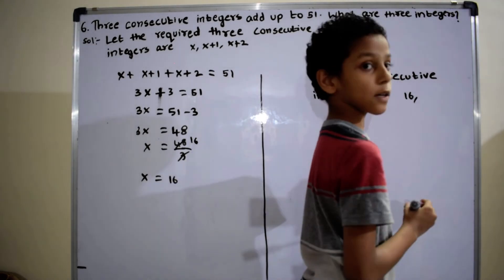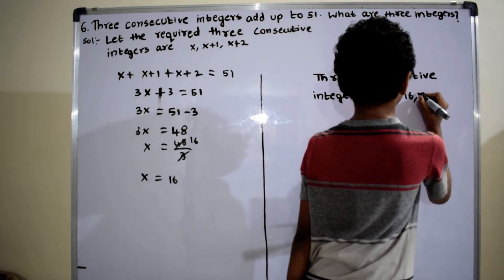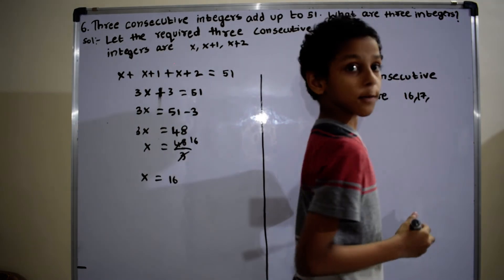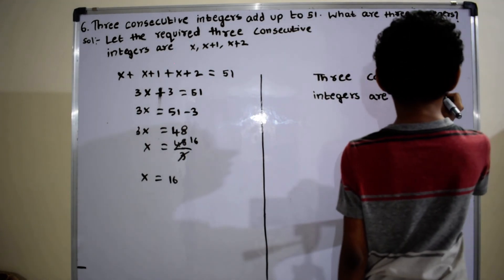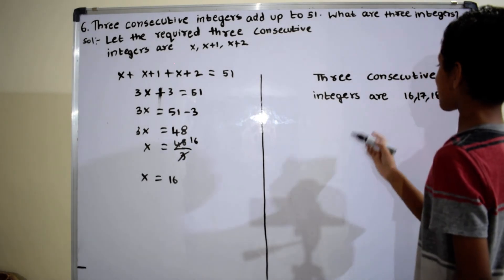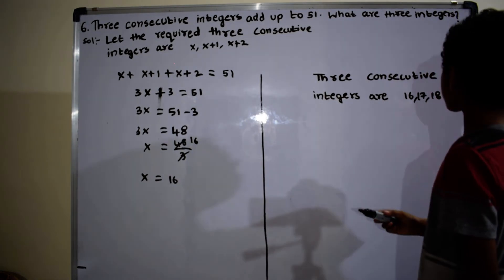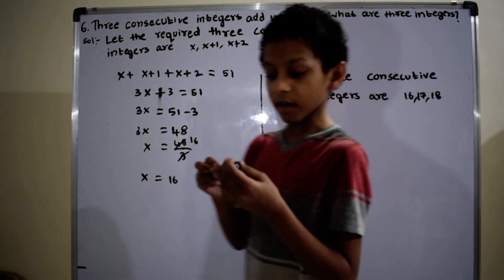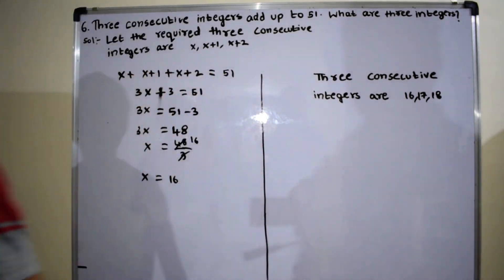Therefore, the 3 consecutive integers are 16, 17, and 18.